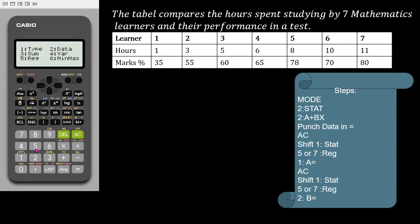Then we will press AC and then we will do shift 1 and then choose number 5, regression. Then number 1 is A's value and equals, and our A value is 38.79. Then AC, shift 1, 5 for regression and number 2 for B's value equals, and our B value is 3.89.